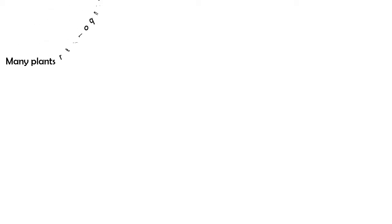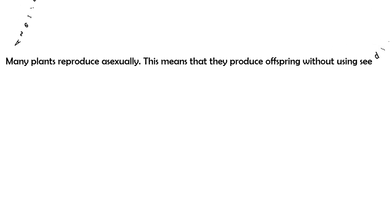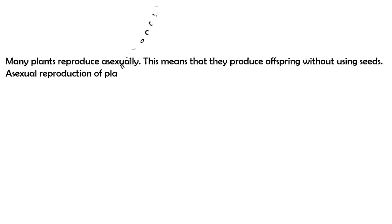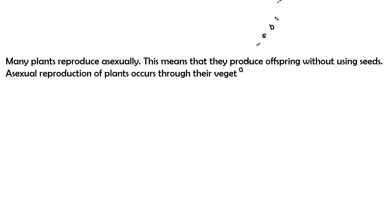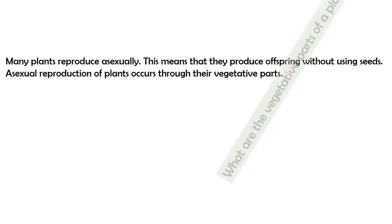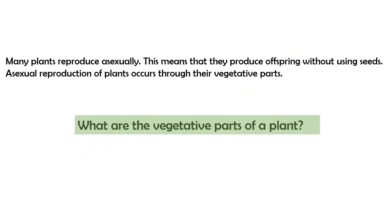Many plants reproduce asexually. This means that they produce offspring without using seeds. Asexual reproduction of plants occurs through their vegetative parts. What are the vegetative parts of a plant?